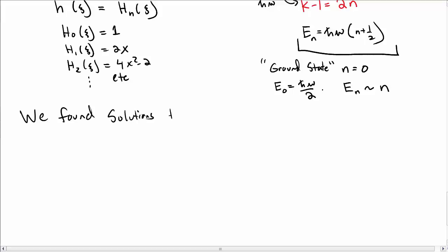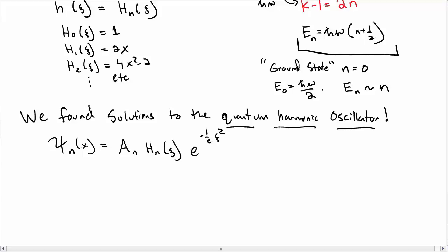Okay, so let's summarize. We found solutions to the quantum harmonic oscillator. These solutions took the form ψ_n(x) = A_n H_n(ξ)e^(-½ξ²), where A_n are a set of normalization constants, the H_n(ξ) are Hermite polynomials (and you can just look up the Hermite polynomials in a table), and this ξ that keeps showing up is related to x by the factor of the square root of mω/ℏ.